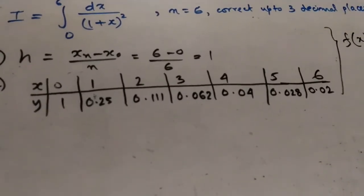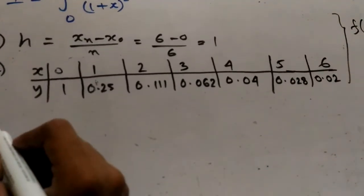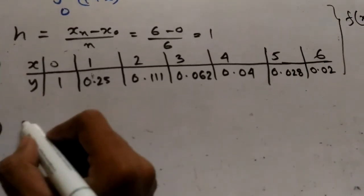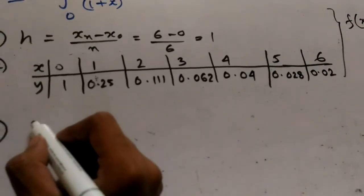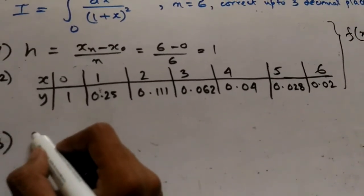And putting x equals to 6 we get f(x) equals to 0.02. Now we have constructed a table. So the final step, that is, we have to calculate the value of the integration or the integral.